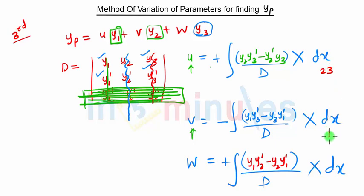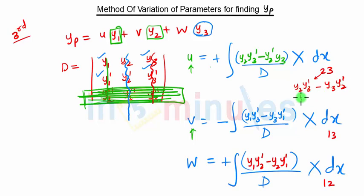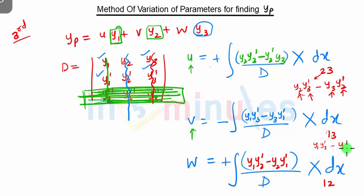Observing carefully: for u we use indices 2 and 3 (y2·y3' minus y3·y2'), for v we use indices 1 and 3 (y1·y3' minus y3·y1'), and for w we use indices 1 and 2 (y1·y2' minus y2·y1'). You can remember this pattern as 2-3, 1-3, 1-2. In each case, keep the first term as is and take the derivative of the second, then subtract the reverse.